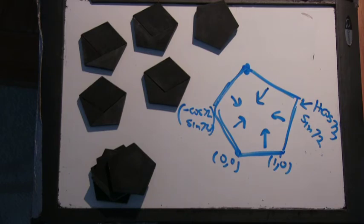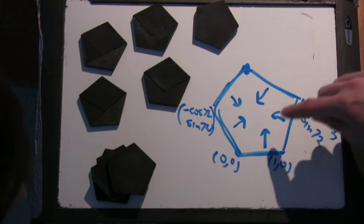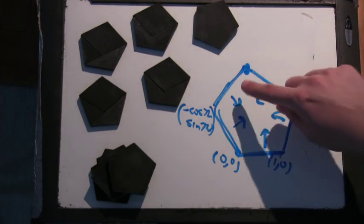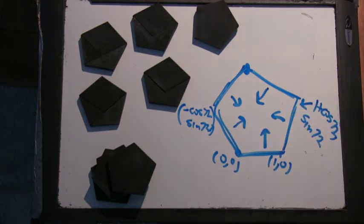So you tell the computer or Mathematica in region plot, tell me all the points that are above this line, above that line, below that line, below that line, and above that line. And it says, hey, what do you know? That's the pentagon.